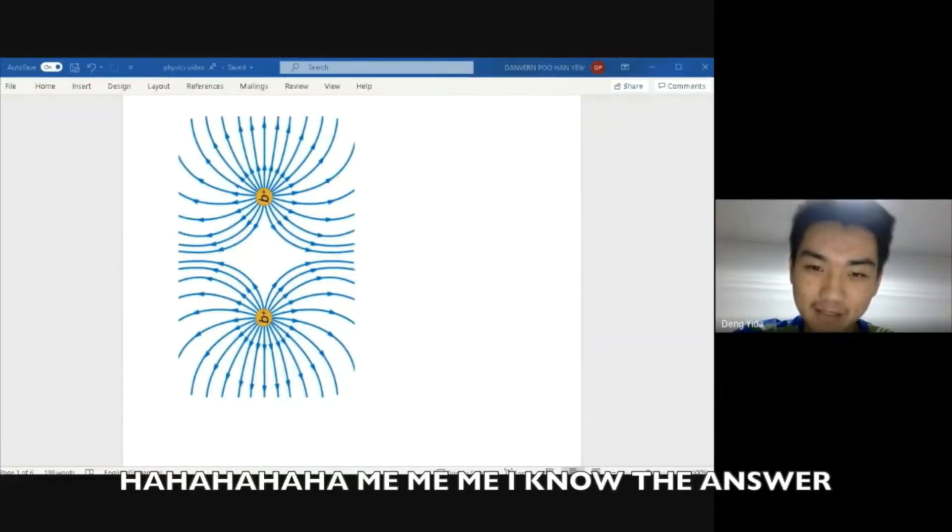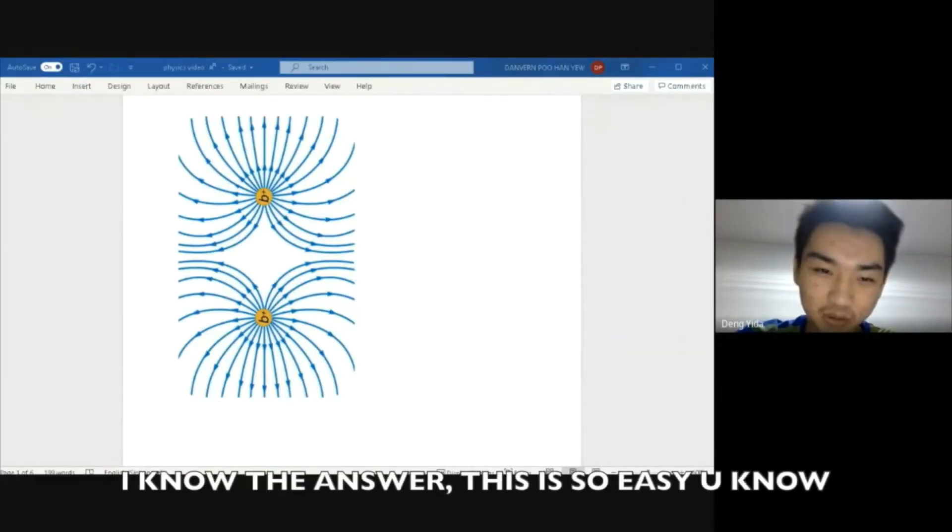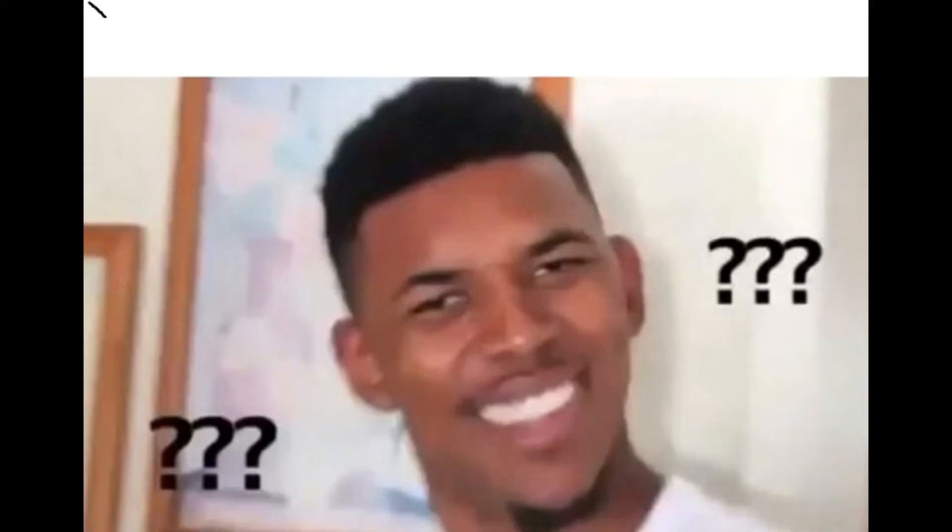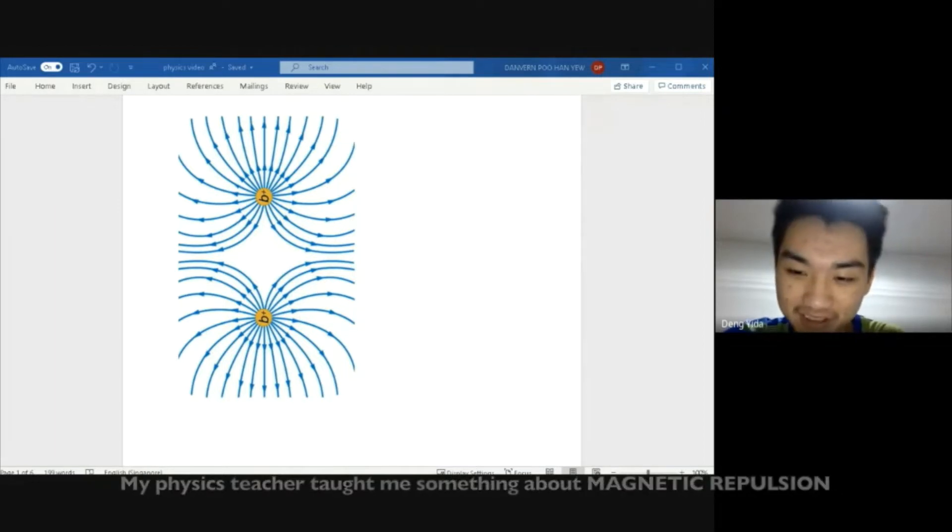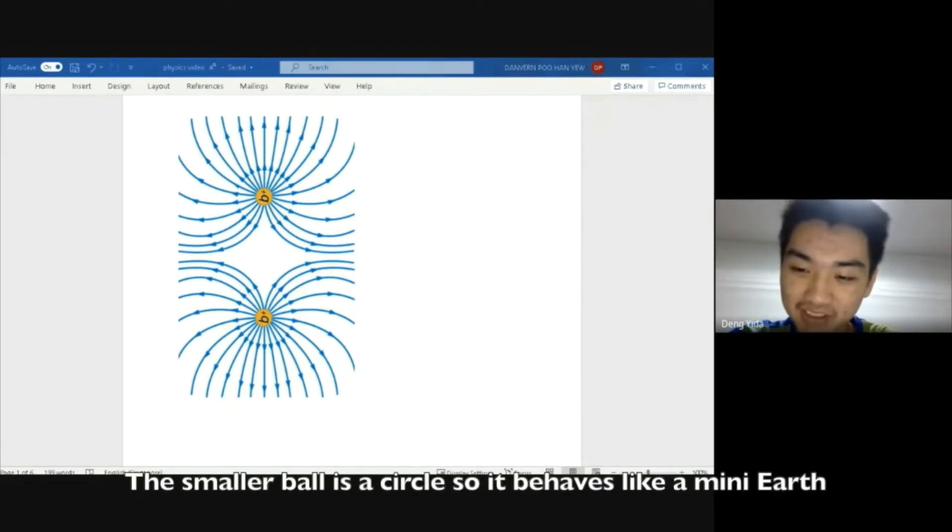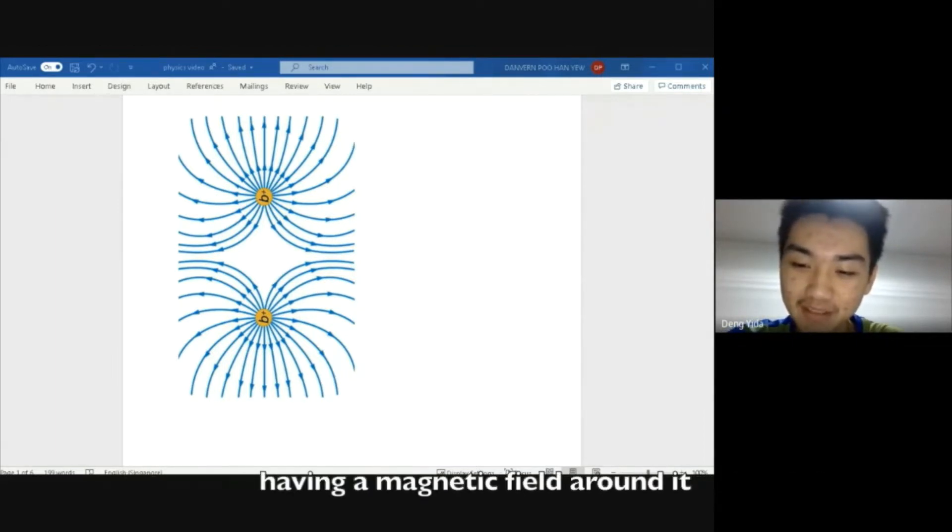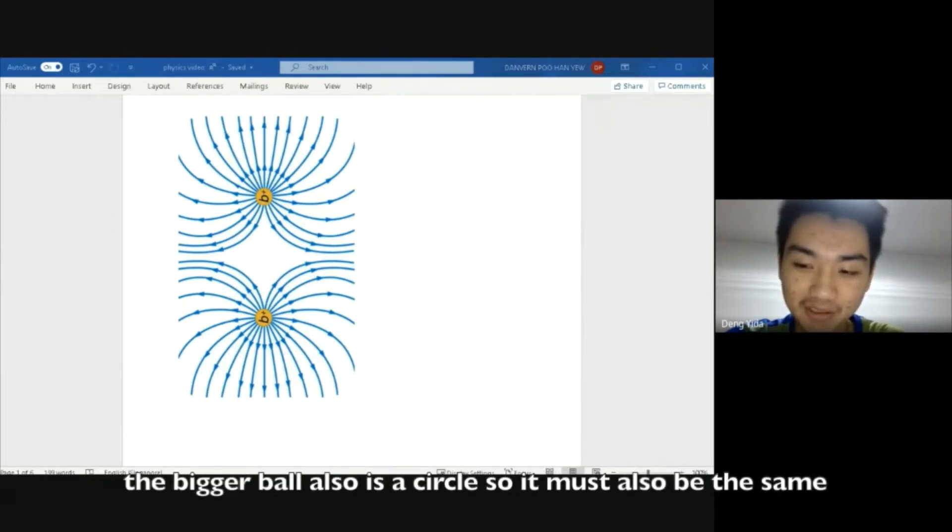Me, I know the answer! This is so easy. It must be due to magnets. My physics teacher taught me something about magnetic repulsion. The smaller ball is a circle so it behaves like a mini earth having a magnetic field around it. The bigger ball also is a circle so it must also be the same.